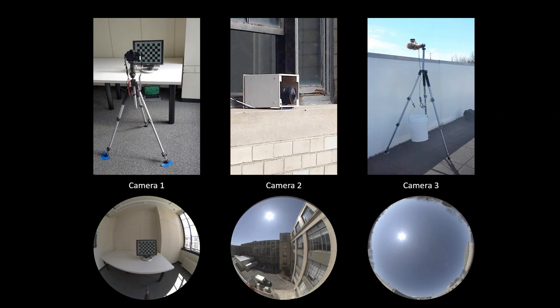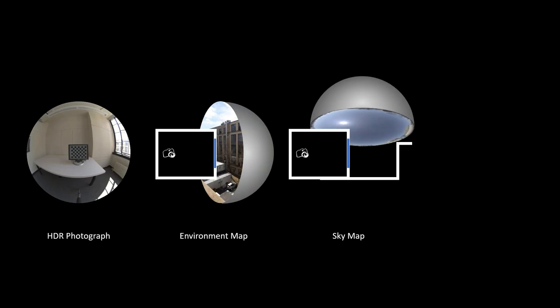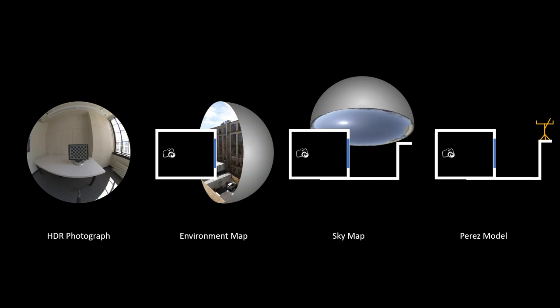I outfitted the space with three cameras: one inside facing a monitor displaying a checkerboard pattern, one on the window ledge to observe incoming light, and one on the roof next to the weather station to observe the sky. From those cameras I can compute visual comfort information in several ways: using an HDR photograph directly; modeling the space and using the window ledge picture as an environment map; modeling the courtyard and using the sky picture as a sky map; and using a numerical sky model from the weather station—specifically the Perez all-weather sky model.